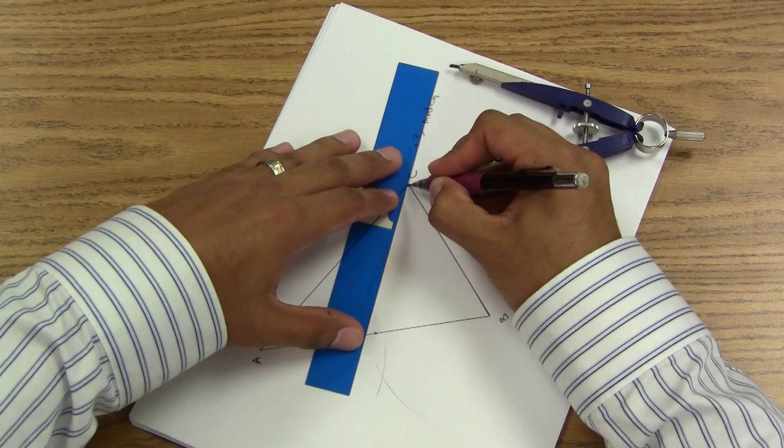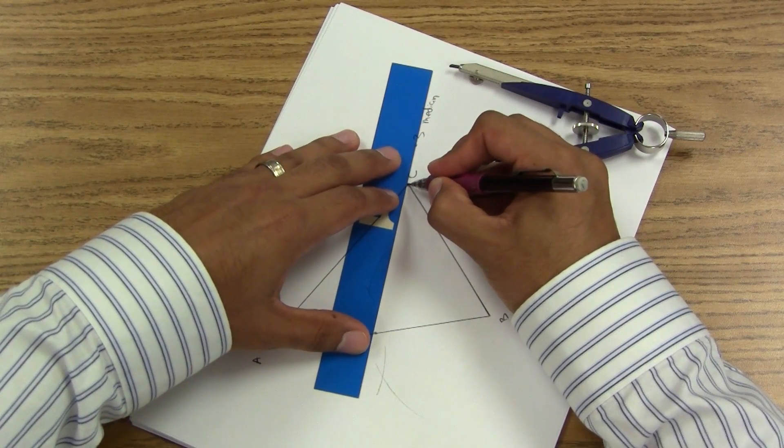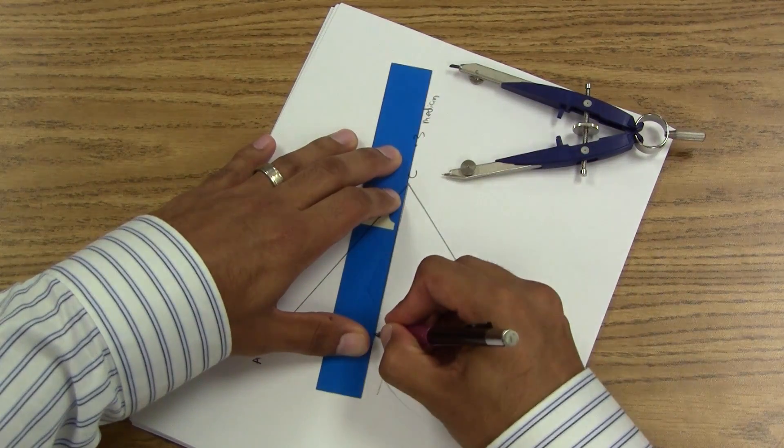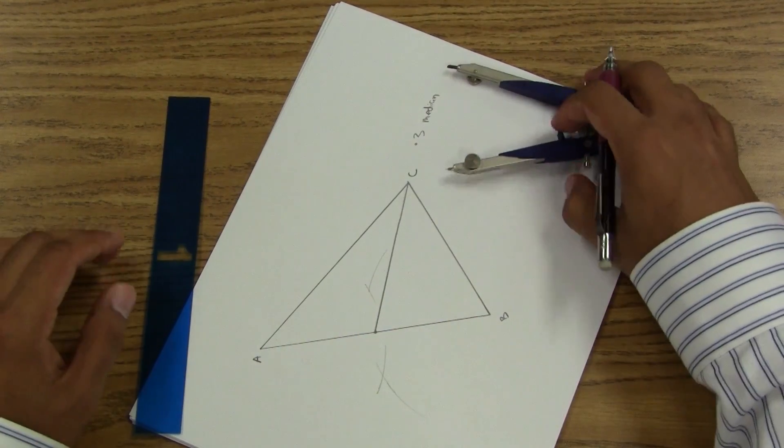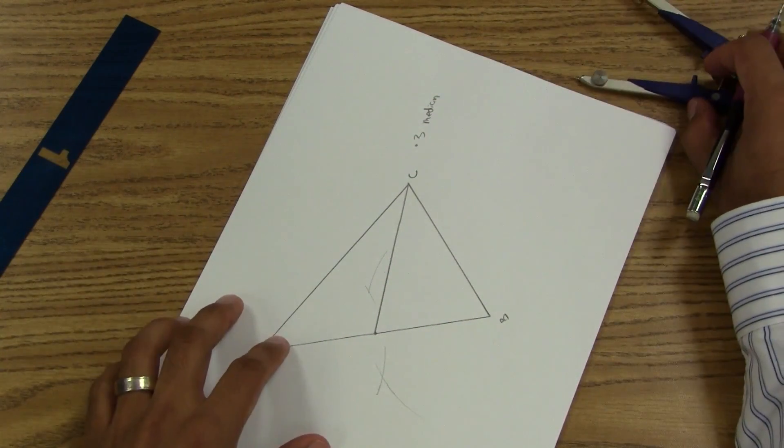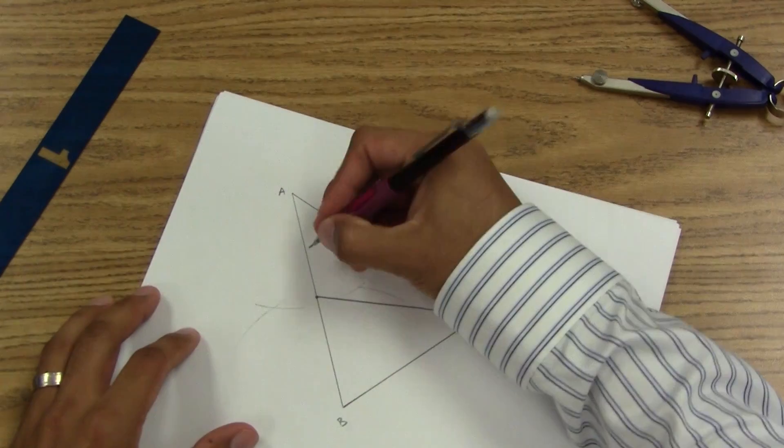And connecting it to the other side, the opposite vertex. I got one median. Go ahead and pause the video. I'm about to speed this up. Go ahead and catch up with me.